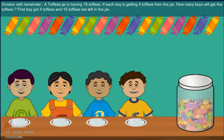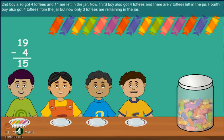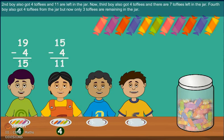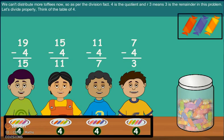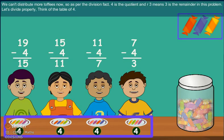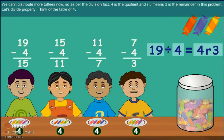First boy got 4 toffees and 15 toffees left in jar. Second boy also got 4 toffees and 11 left in jar. Now, third boy also got 4 toffees and there are 7 toffees left in jar. Fourth boy also got 4 toffees from the jar. But now, only 3 toffees remain in the jar. We can't distribute more now. So, as per division fact, 4 is quotient and r3 means 3 is the remainder in this problem.